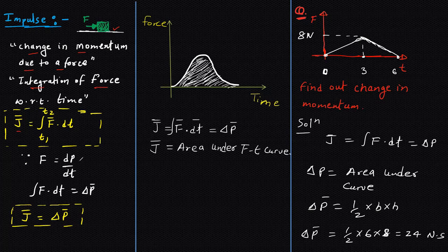Now we know F equals dP by dt. If we just multiply dt on this side, we can write F dt equals dP. And if we integrate, we can write integration of F dt equals delta P. So from here we can say that impulse J vector equals change in momentum.